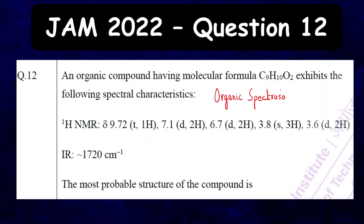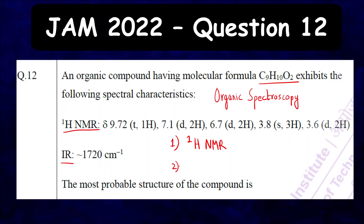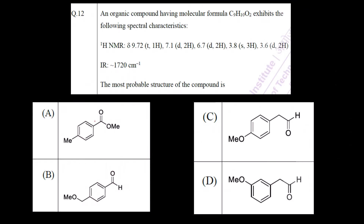The spectral data is given to us and we have to find out the correct structure. The molecular formula is given along with 1H NMR and IR data. Always remember: first check the 1H NMR data, then go for IR data, because many times the IR values are not as per the expected values. The best method for solving this type of problem is by the method of elimination — read each value carefully and try to eliminate the options. That makes the work very simple.